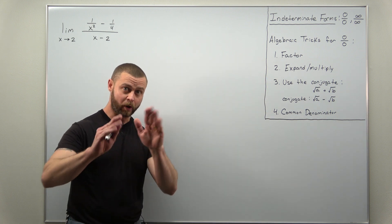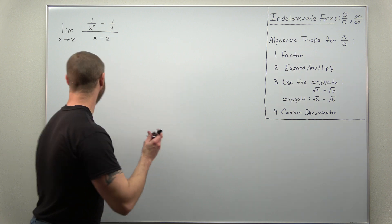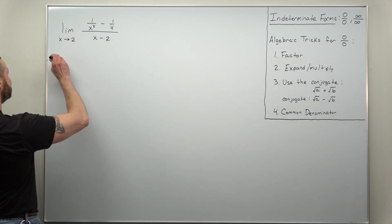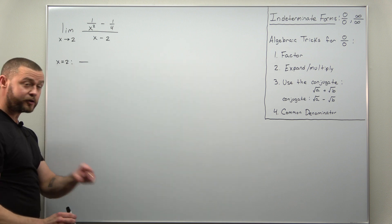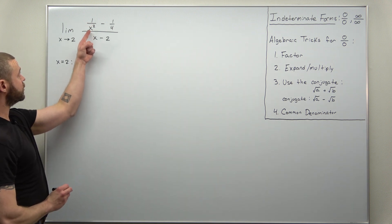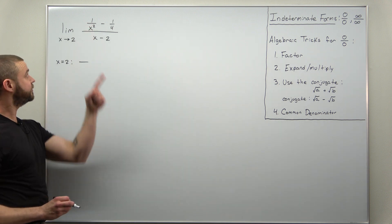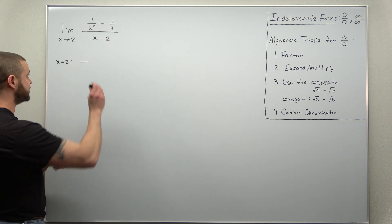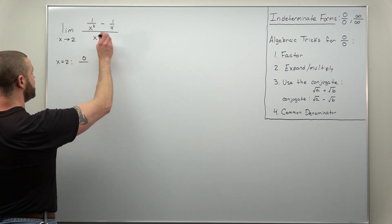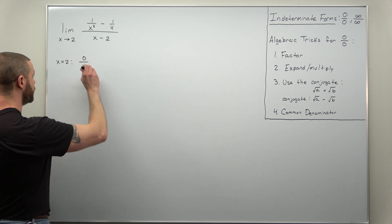Now first we're always going to check for an indeterminate form. Here we're plugging in x as 2, and if you check your numerator you get 1 over 2 squared, so 1 over 4 minus 1 over 4, that's 0. And then in your denominator you get 2 minus 2, which is 0.